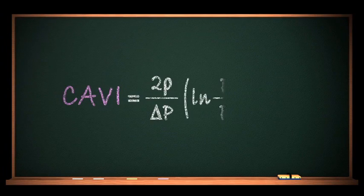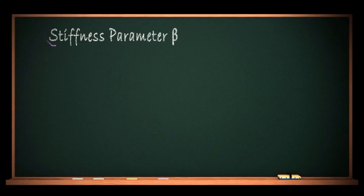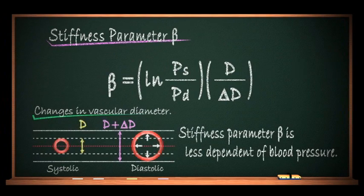CAVI is obtained using the following formula. This formula arose from two concepts. The first is the stiffness parameter beta. This concept, which is the basis of CAVI, lessens the dependency of the stiffness measure on blood pressure.